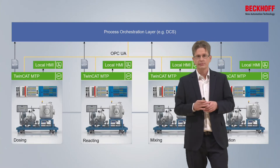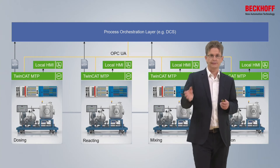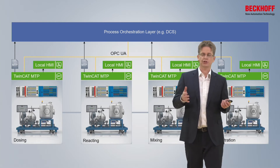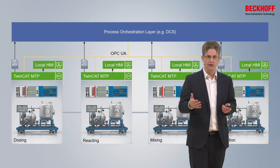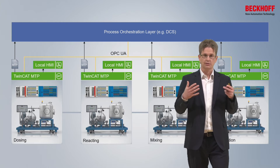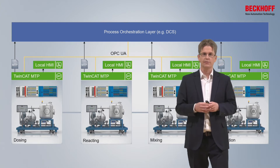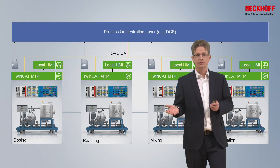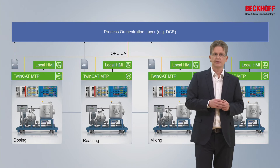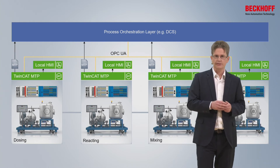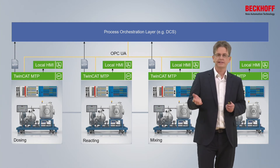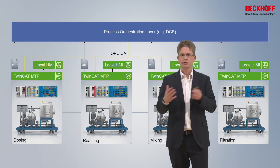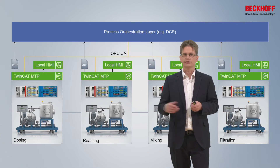The actual real communication between the modules and the POL takes place via OPC UA. MTP does not define a new communication layer — it relies on OPC UA. The node IDs of OPC UA are placed into the MTP file, so the POL knows the node IDs for communication to the different modules.